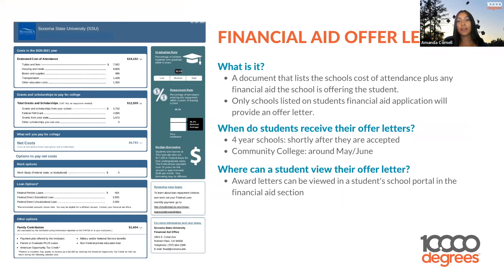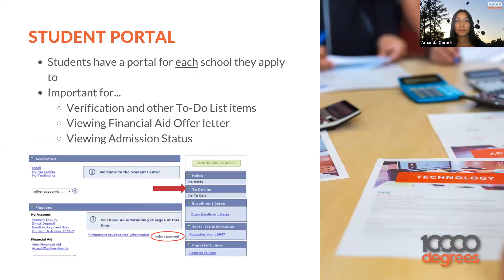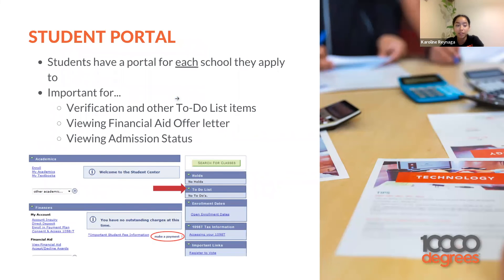Financial aid offer letters: the offer letter is a document that lists the school's cost of attendance and any financial aid the school is offering to the student. Only the schools listed on the financial aid application will provide an offer letter. If you're making a list of schools you're interested in, put those on your financial aid application so you get offer letters for those schools. For four-year schools, you receive the offer letter shortly after being accepted. For community colleges, it's usually around May or June. Award letters can be viewed in the student's school portal in the financial aid section.